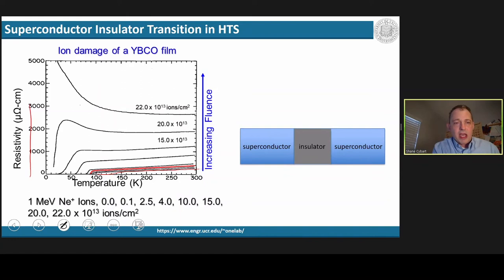And as you increase the disorder from the irradiation, you see that the resistivity increases in a systematic way, and the superconducting transition temperature decreases. At very high doses, the material is converted from a superconductor to an insulator.